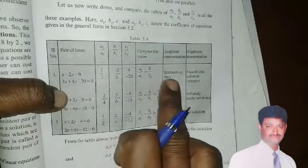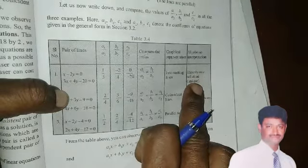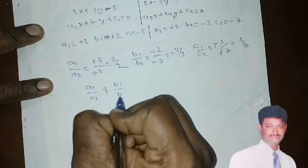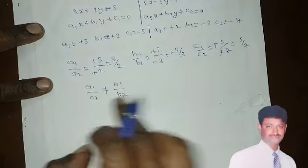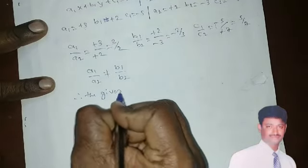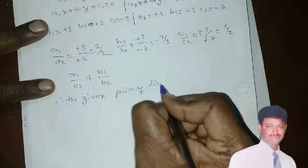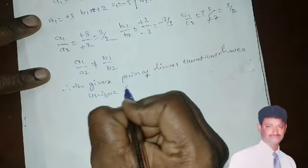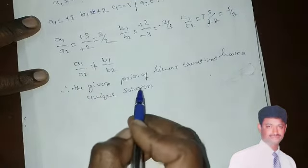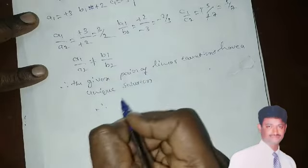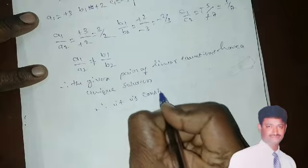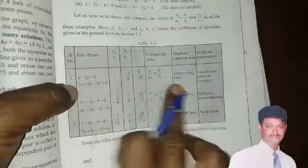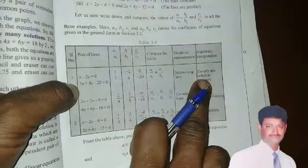Since A1 by A2 is not equal to B1 by B2, the lines are intersecting lines with exactly one solution. Therefore, the given pair of linear equations has a unique solution and is consistent.